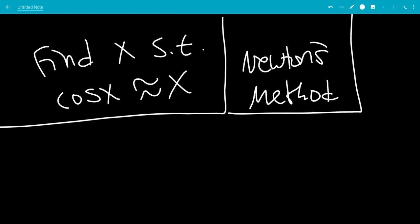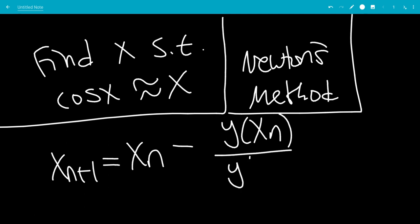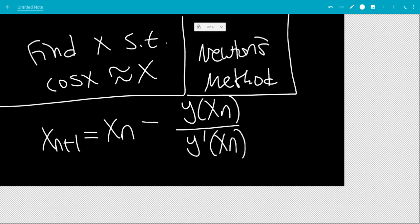So what is Newton's method? That would be xn plus 1 equals xn minus y of xn over y prime of xn. And the function y is any function when it's set equal to 0. We can call that y, and that would be the root that we want to solve for.